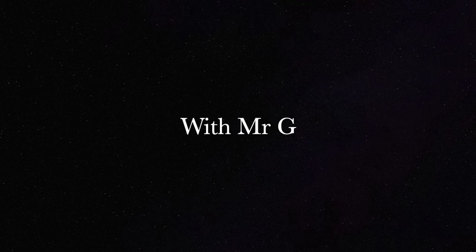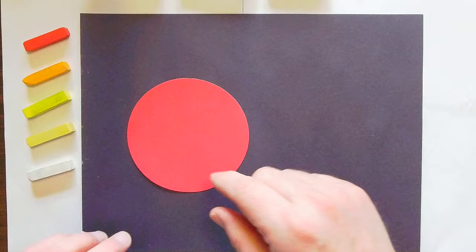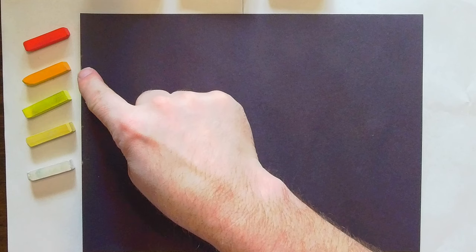Creating a solar eclipse using pastels with Mr. G. So today we're going to be starting with a black piece of paper, a template of a circle, and then we have our pastels: red, orange, yellow, a little bit lighter yellow, and white. It's pretty simple stuff. You can even do this without a second yellow on there.